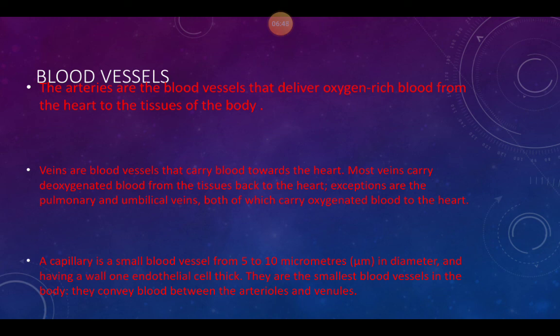Veins carry blood back towards the heart. Most veins carry deoxygenated blood from the tissues back to the heart; exceptions are the pulmonary and umbilical veins, which carry oxygenated blood to the heart. Veins have a large lumen because the blood is under less pressure when returning to the heart, and they have valves — like doors — that allow blood to pass forward and then close to prevent backflow.